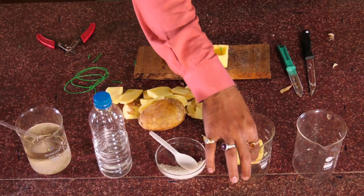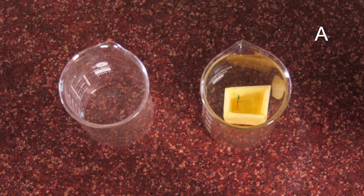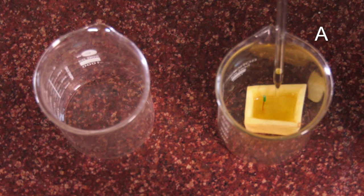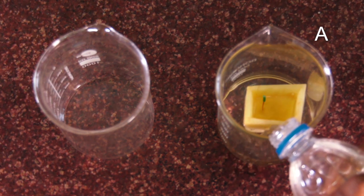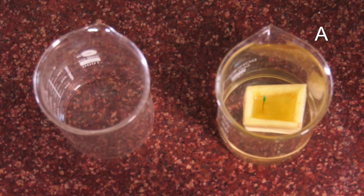After clearing the table, put the beakers side by side. In one, pour the concentrated sugar solution. This is the beaker with pure water. Put some sugar solution inside the potato and mark the level of the sugar solution with a pin.